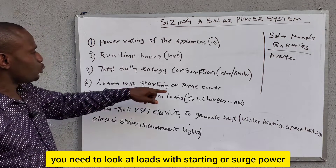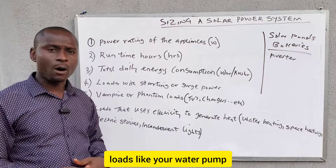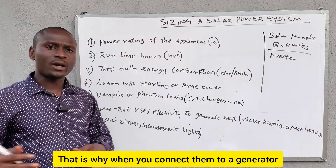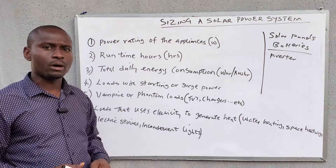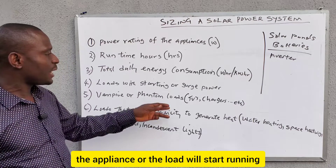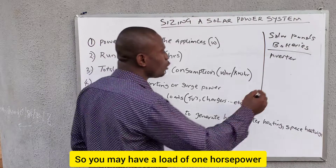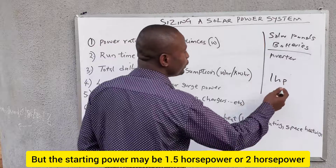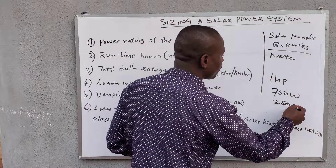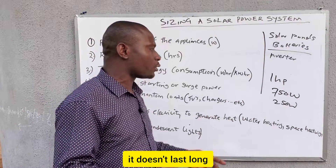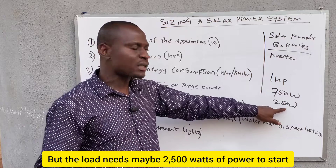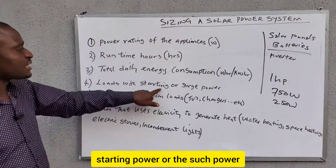You also need to look at loads with starting or surge power. Loads like water pumps, AC water pumps, refrigerators, and air conditioners have starting power. When you connect them to a generator and switch them on, the generator sounds heavily loaded for a few seconds, then the appliance runs at its normal power. For example, a one-horsepower load — 750 watts — may require 2,500 watts of starting power. That surge lasts just about five seconds before it returns to its normal 750 watts. We call this starting power or surge power.